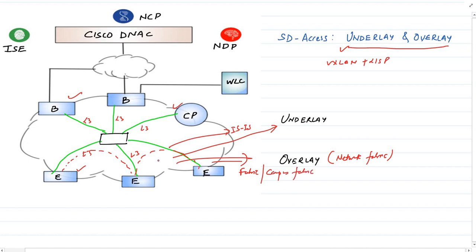We call this virtual network fabric or campus fabric in SD-Access terminology. You can see this here. So this is kind of an overlay for SD-Access technology. Now I believe we have a good understanding of SD-Access underlay and overlay.